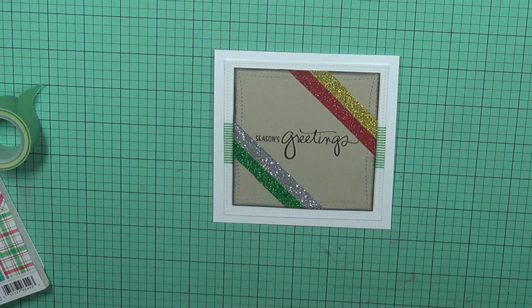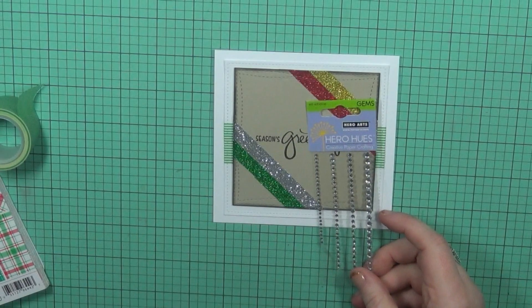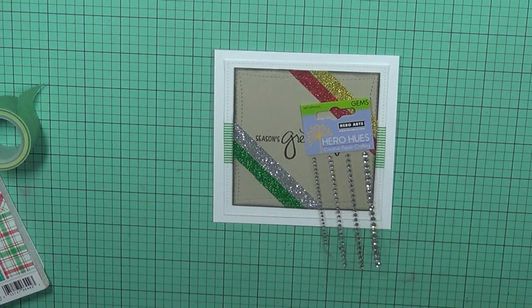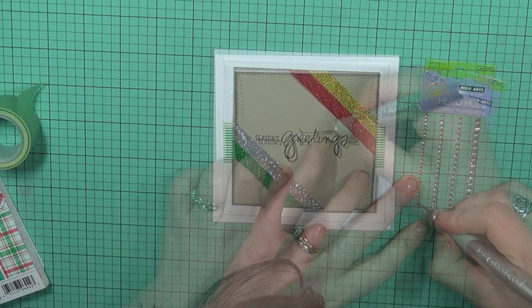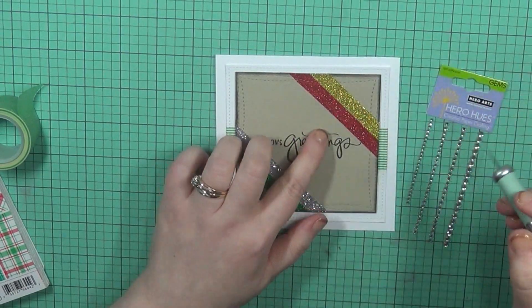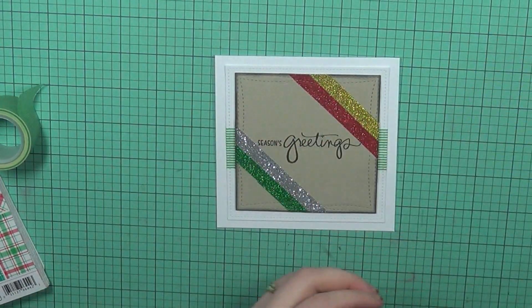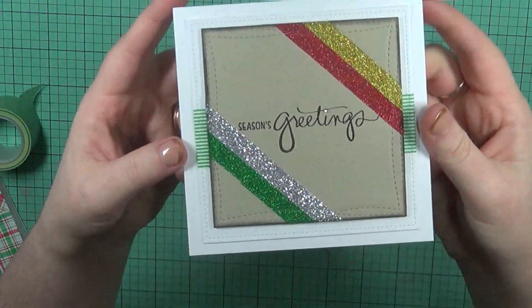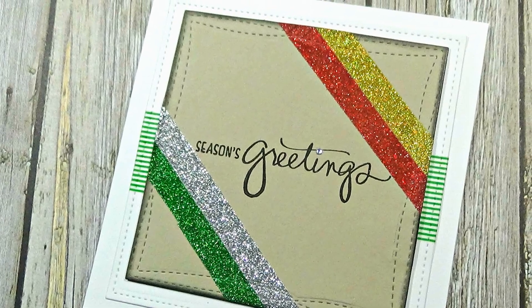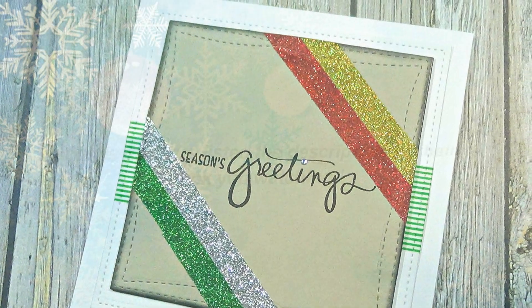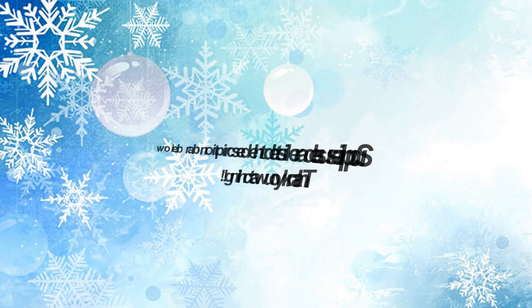So for a final touch, I thought I'd take these gemstones here from Hero Arts and take one of the smaller ones, the very smallest ones in the pack and take my craft knife here and just cut one off of the little strip here, cause this is a full strip and add it to the dot of the i. And that completes our card for today. I hope you enjoyed the tutorial. Please subscribe to my channel if you haven't already, and I will catch you on my next video. Thanks for watching.